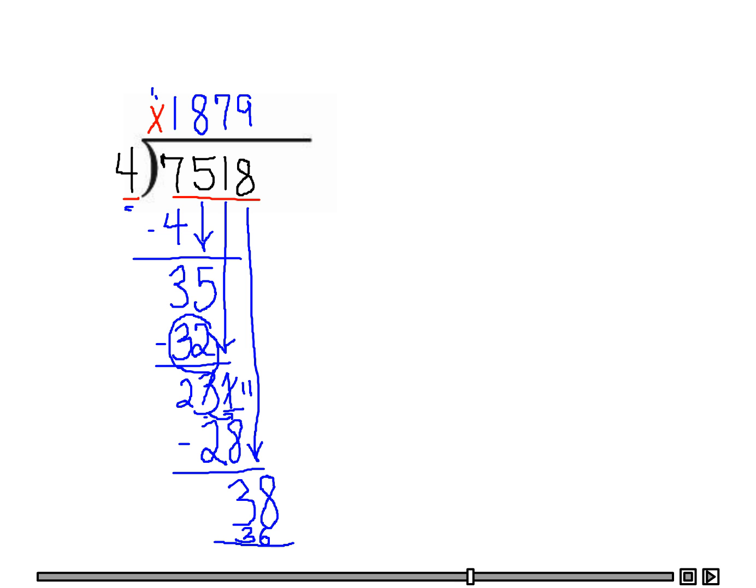Alright. So I need to subtract that. And this would be two. And three minus three is zero. So my remainder is two. I don't have any more digits to bring down. So I am done with that.